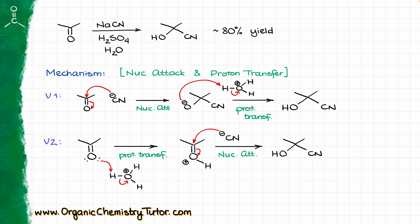Which mechanism is more correct? As far as I know, there are no direct mechanistic studies proving this mechanism one way or the other. Personally, I lean towards the second version — the proton transfer first — simply because forming a negatively charged intermediate in acidic conditions, after all we are working in sulfuric acid, feels like a bit of a stretch. In many other reactions of carbonyl compounds in acidic conditions, the first step is typically a proton transfer.